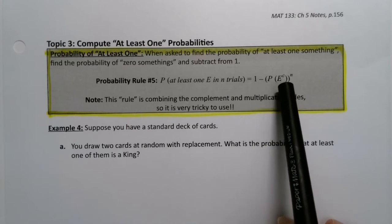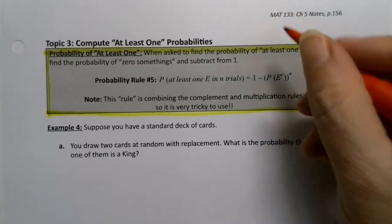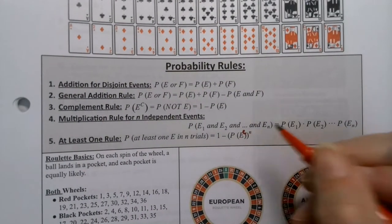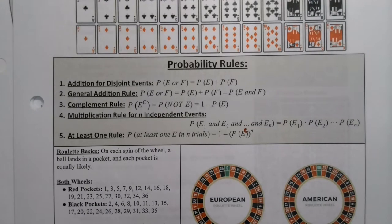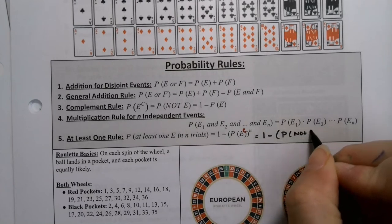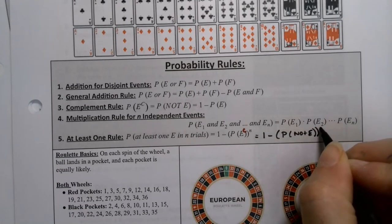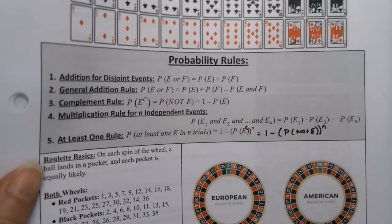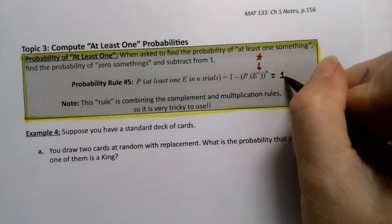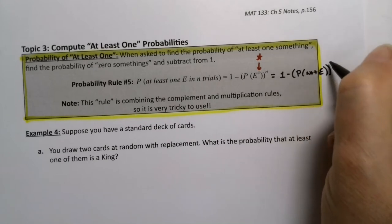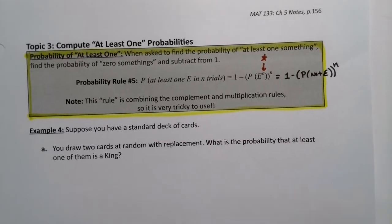The typo is right here: if you want at least one event E in n trials, you want one minus the probability of E-complement. Make sure that E-complement is written in there and on your exam notes packet as well. This is also the same as one minus the probability of not having event E, raised to the n power — one minus P(not E) to the n.